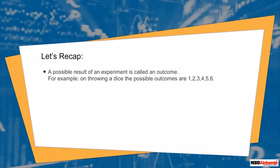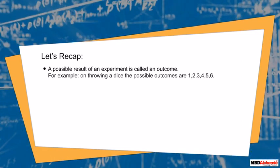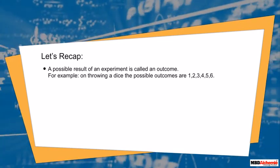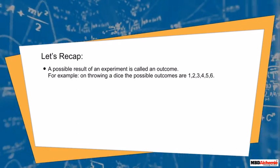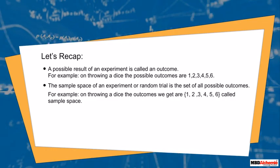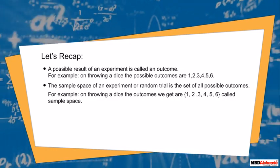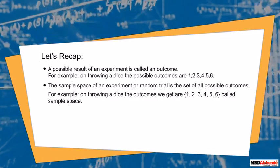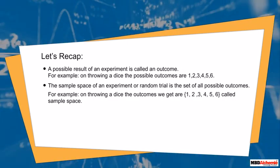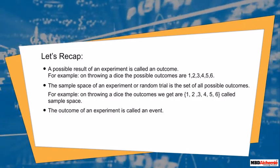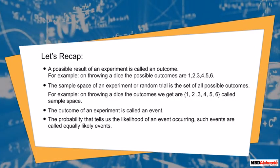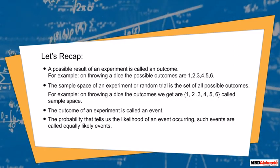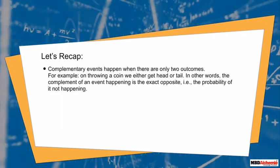Let's recap. A possible result of an experiment is called an outcome. For example, on throwing a dice the possible outcomes are 1, 2, 3, 4, 5, 6. The sample space of an experiment or random trial is the set of all possible outcomes — for example, on throwing a dice the outcomes are 1, 2, 3, 4, 5, 6, called sample space. The outcome of an experiment is called an event. Events that have the same probability of occurring are called equally likely events. Complementary events occur when there are only two outcomes.